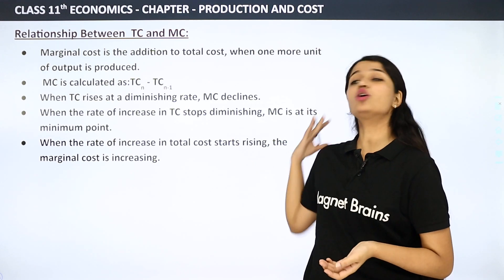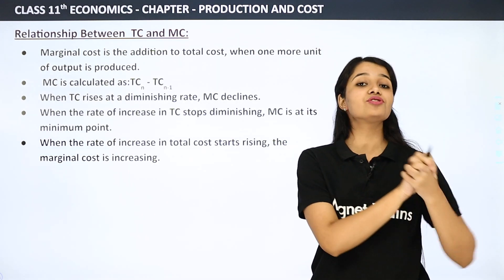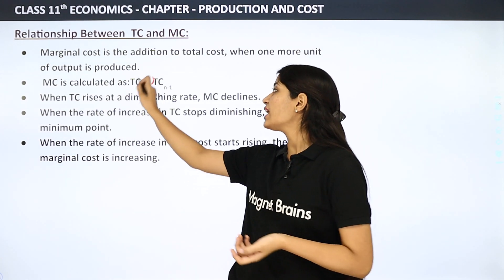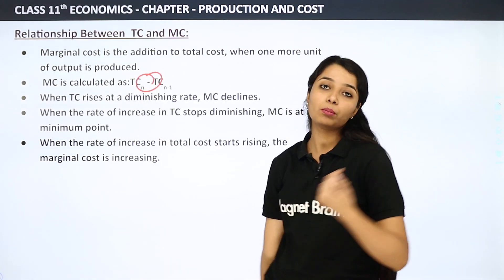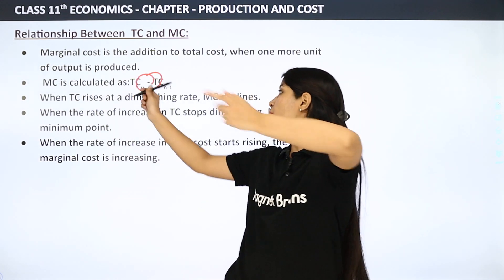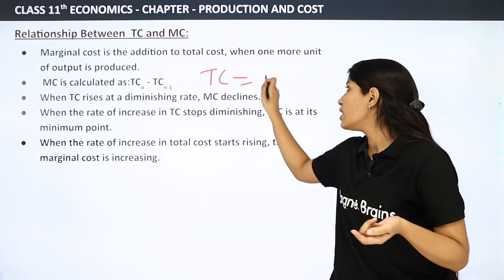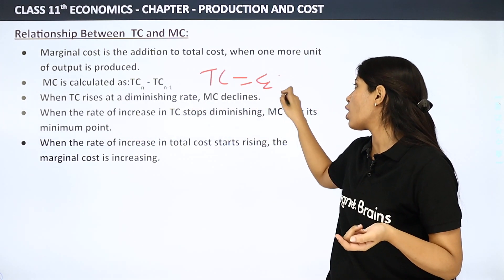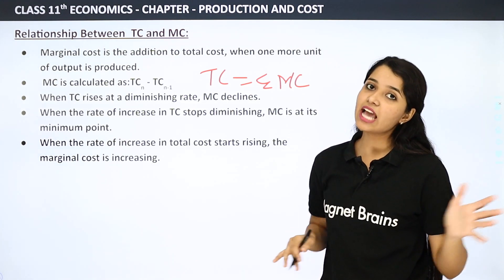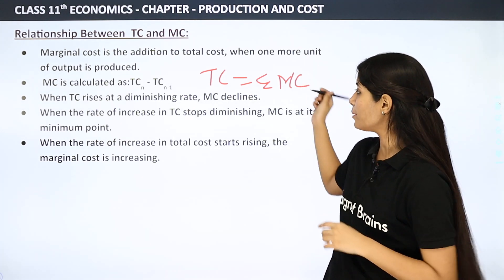If you want to find total cost and marginal cost is given, what will you do? Since we subtracted to get MC, now we will sum up. TC is equal to the summation of MC. So total cost is the summation of marginal cost.